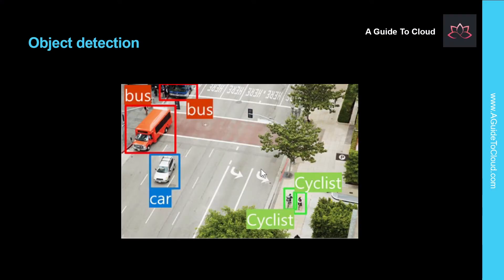Object detection machine learning models are trained to classify individual objects within an image and identify their location with a bounding box. For example, a traffic monitoring solution might use object detection to identify the location of different classes of vehicle.